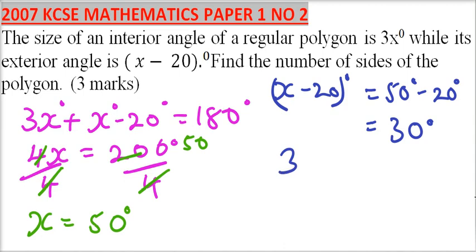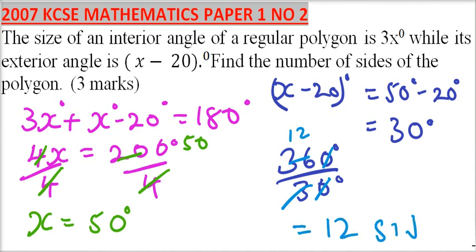So we divide 360 by 30 degrees and you should be able to get 12. The polygon has 12 sides. That's how you work out that problem and you get yourself 3 marks.